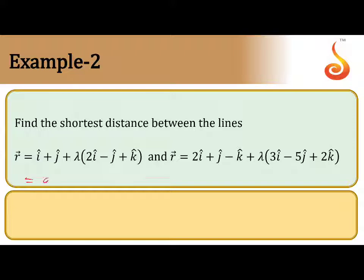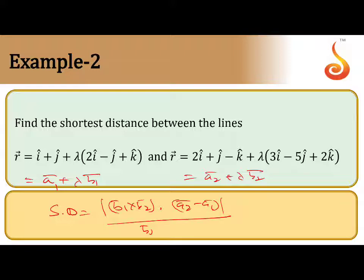Let us take this as ā₁ + λb̄₁ and this is ā₂ + λb̄₂. You have the formula for shortest distance between two skew lines: that is (b̄₁ × b̄₂) · (ā₂ - ā₁) divided by the magnitude |b̄₁ × b̄₂|. This is the formula. Let us solve the problem in the next page.